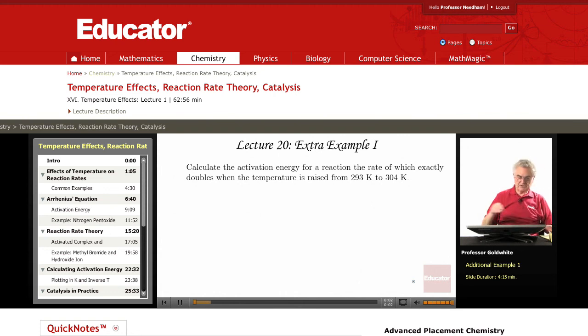The Arrhenius equation gives us a relationship between activation energy and rate constants. And in this case, we have the rate constant at 304 divided by the rate constant at 293 is exactly 2.000.